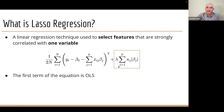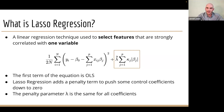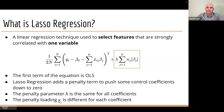We also have a second term in lasso regression — we call this the penalty term. It's used to push some of our control coefficients down to zero so that the sum of absolute values of our regression coefficients is optimal. We have two factors: our penalty parameter lambda, which is the same for all coefficients, and a penalty loading kappa_j, which is going to be different for each coefficient.